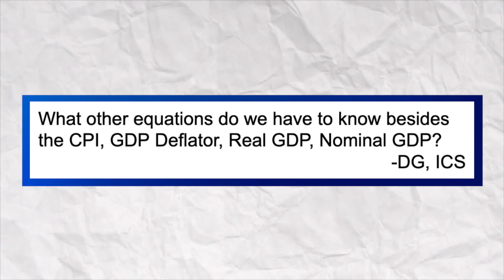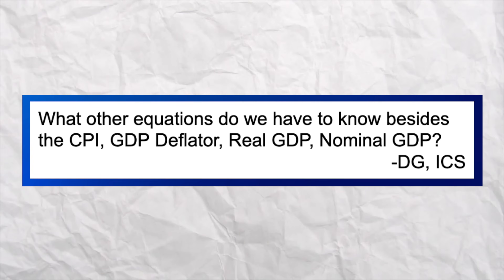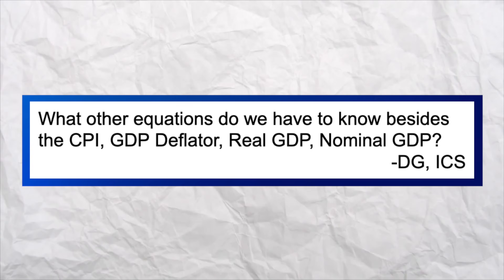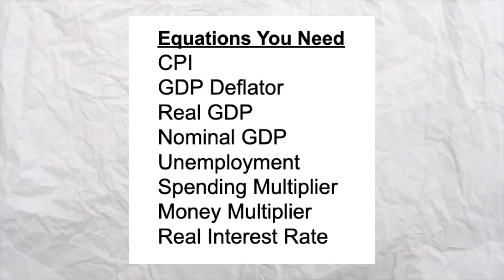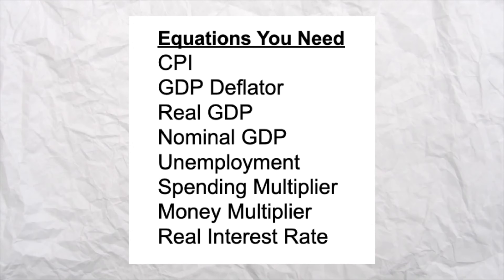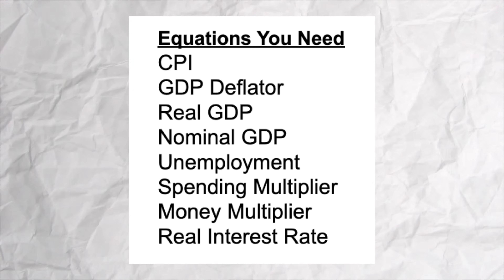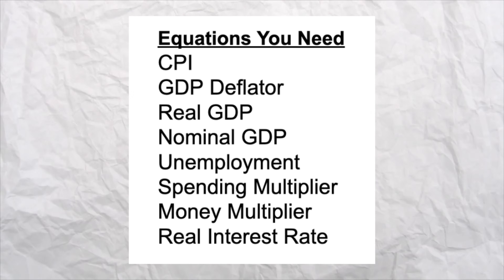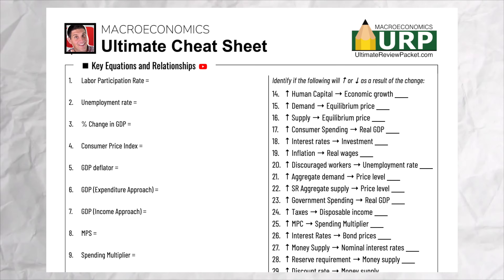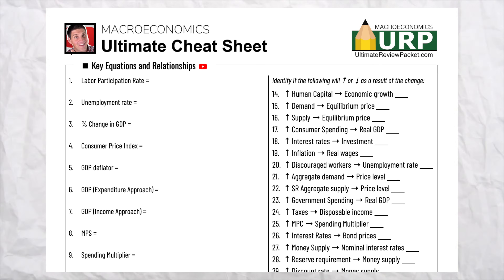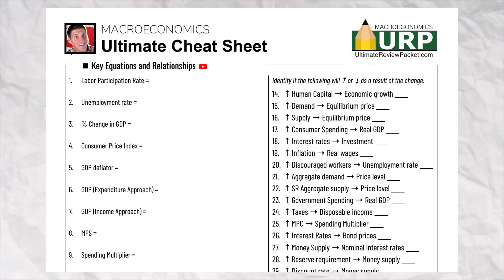Now let's talk about the content. What equations do we need to know besides CPI, GDP deflator, real GDP, and nominal GDP? Make sure you know unemployment, the spending multiplier, the money multiplier, and how to calculate the real interest rate. You should definitely fill out the ultimate cheat sheet in the ultimate review packet — have all those equations in your brain and look at the paper right before you walk into the AP exam.